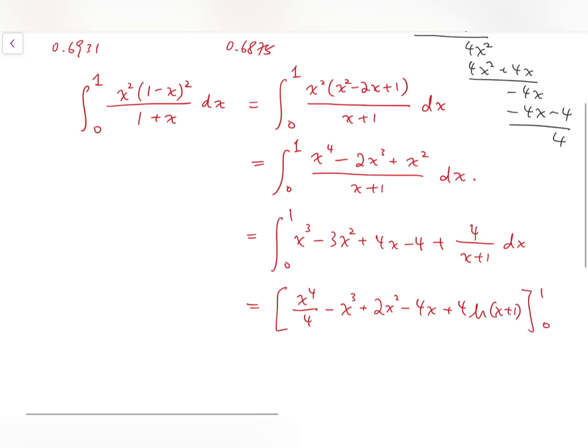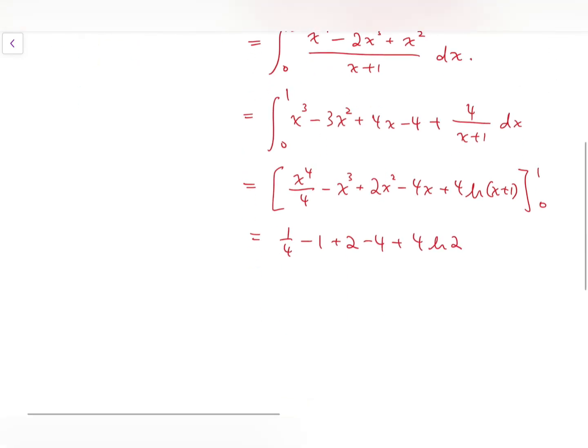So after integrating and putting the limits inside the expression, we'll get 0 for the lower limit part, so we only have to calculate the upper limit part, which is 1 fourth minus 1 plus 2 minus 4 plus 4 times natural log of 2. So after computing, you will have minus 11 over 4 plus 4 times natural log of 2.